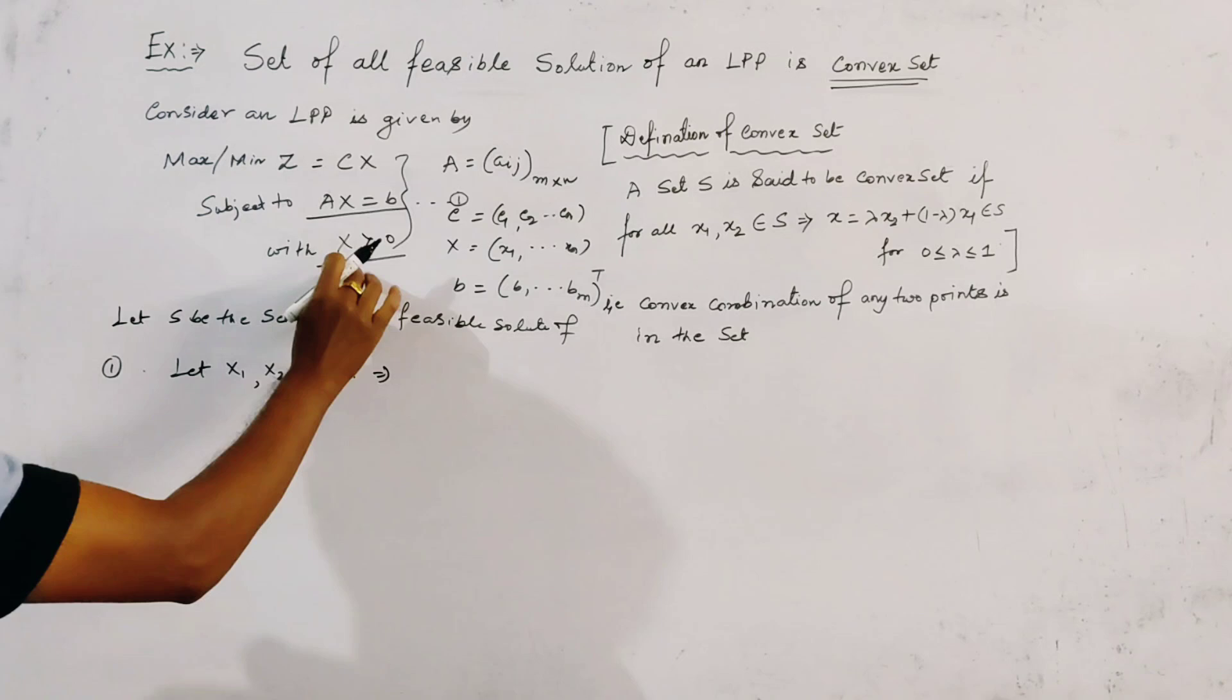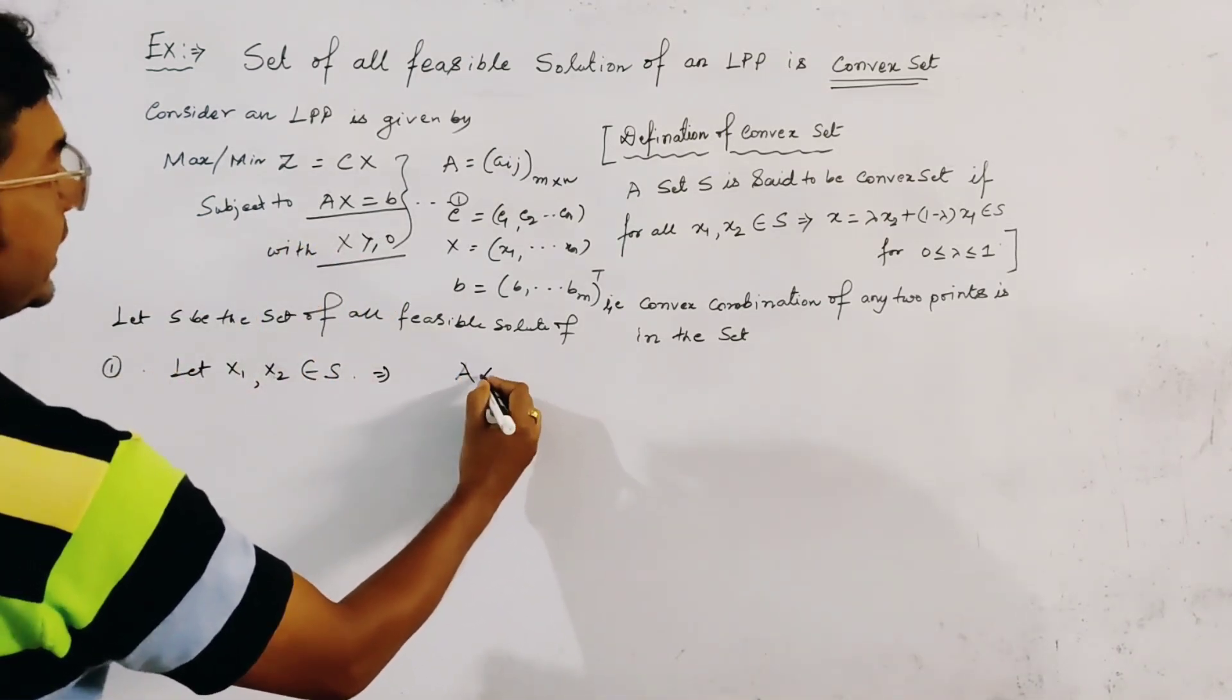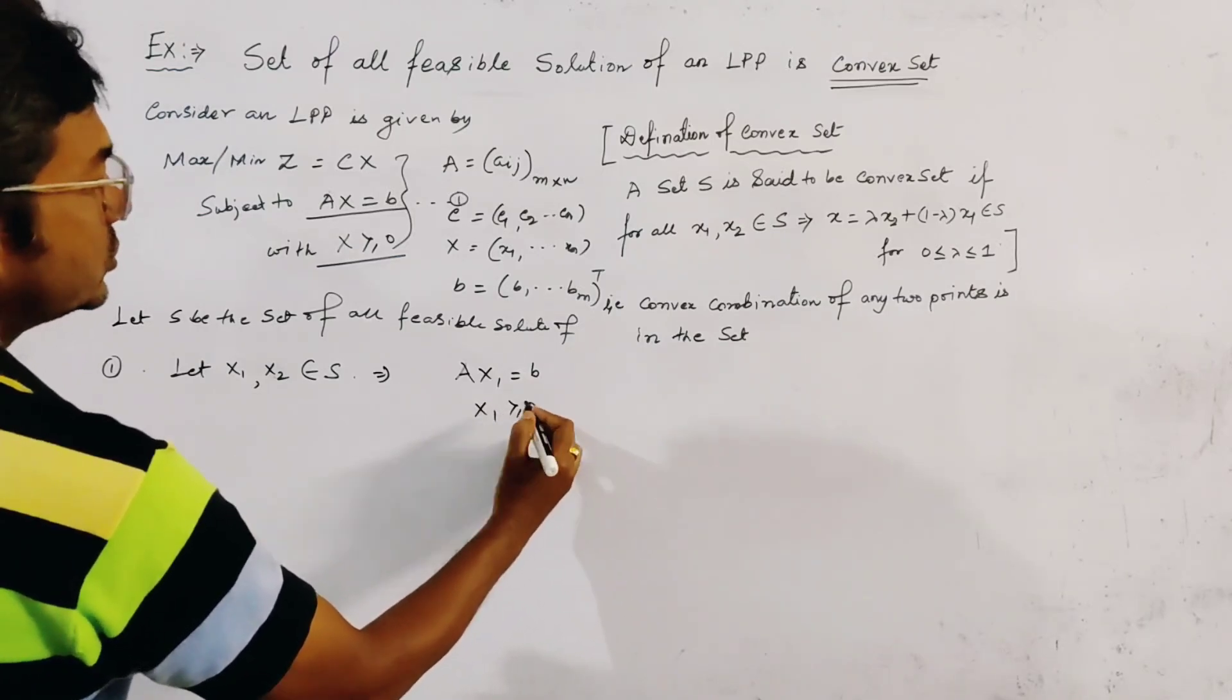That is, constraints together with the non-negative restriction. That is, we can write A, X1, this is equal to B, and X1, greater or equal to 0.